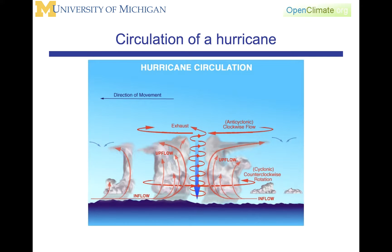Here is an example of a hurricane where we see rotation down low, which is counterclockwise in the northern hemisphere. This is called cyclonic. Then, after the air gets up to the top and it diverges, we have this idea of clockwise flow — anticyclonic. So with this hurricane, we see both cyclonic and anticyclonic rotation.